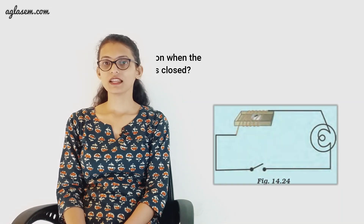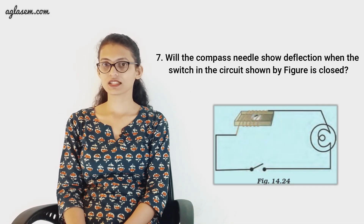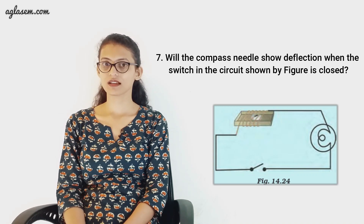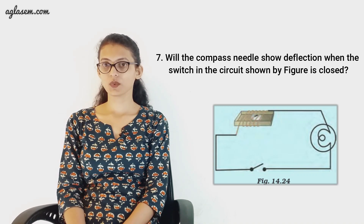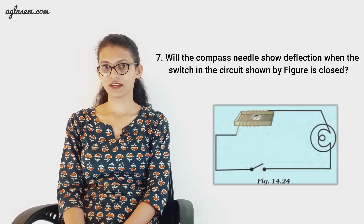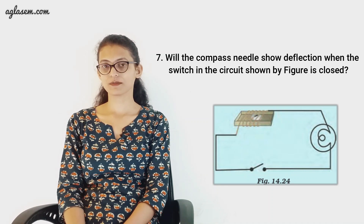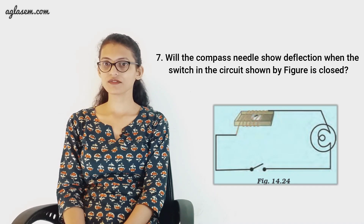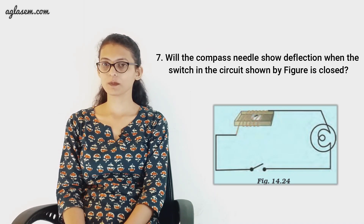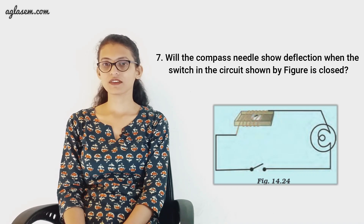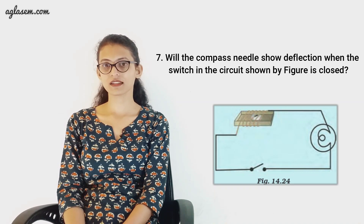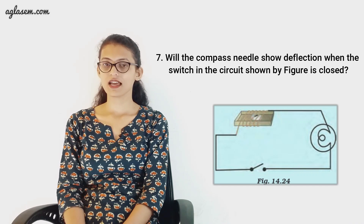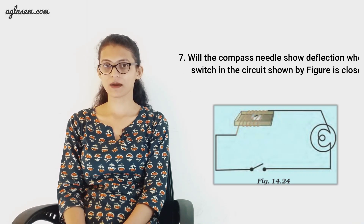Our next question is question number seven: will the compass needle show deflection when the switch in the circuit shown in the figure is closed? The needle will show deflection only when the wire shows a magnetic effect, and a wire will show a magnetic effect only when electric current is passed through it. As the circuit shown is an open circuit with no battery or cell attached, no current will pass through the wires and no magnetic effect will be shown. Hence, there will be no deflection of the compass needle.